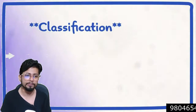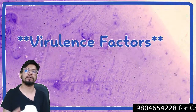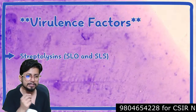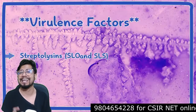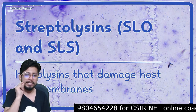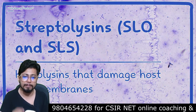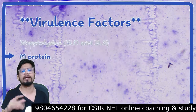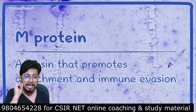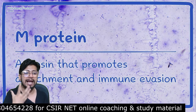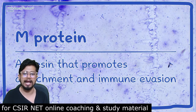Regarding virulence factors, the first are streptolysins SLO and SLS — both are hemolysins that can damage the host cell membrane, including that of red blood cells. M protein is another virulence factor; it is an adhesin that promotes the attachment of Streptococcus pyogenes to the host cell and helps evade the immune system.